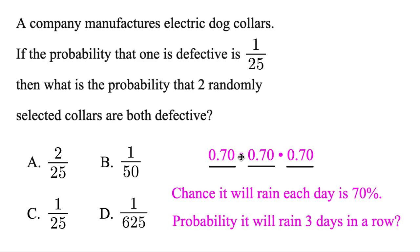But finally, if you want them all to happen, you're going to use multiplication. And type this in the calculator. That's going to tell us the probability it rains three days in a row is 34%.